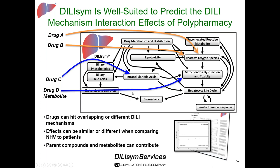We are increasingly hearing interest from collaborators in understanding drug combinatorics. DILI Sim provides a systematic and quantitative way to address this—for example, two drugs both inducing oxidative stress may create a liver safety liability when combined that didn't exist with either drug alone. Alternatively, two drugs or a drug and metabolite hitting different mechanisms can be systematically evaluated within DILI Sim.